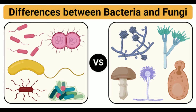Size: The size of bacteria ranges from 0.5 to 5 micrometers. The size of fungi ranges from 2 to 10 micrometers. Cell wall: The cell wall of bacteria is made up of peptidoglycan, under which a cell membrane is present. The cell wall of fungi is made up of chitin. Morphology: Bacteria are found to have three distinct shapes — round (cocci), spiral (spirula), and rod-shaped (bacillus). Fungi are found to have varying shapes, but most are spotted in the form of a thread-like structure called hyphae.